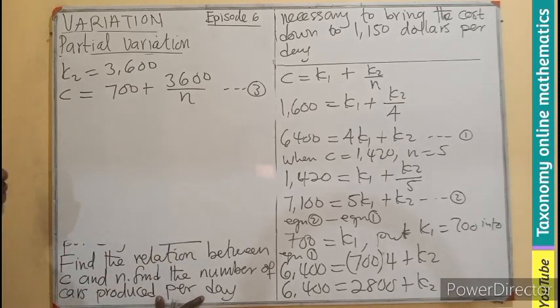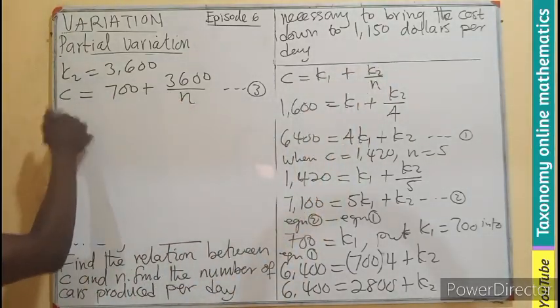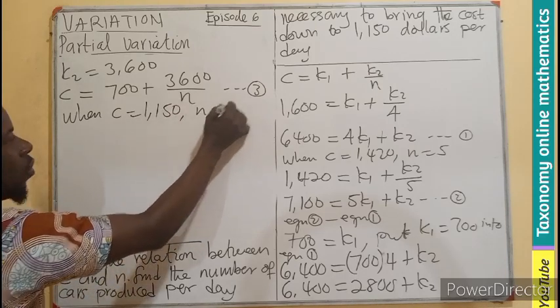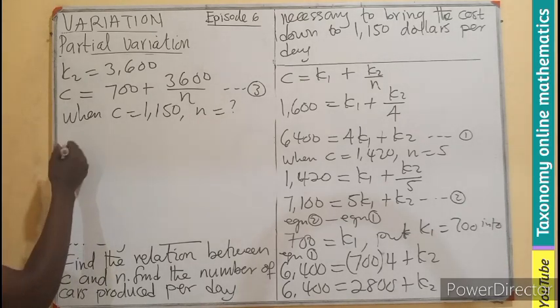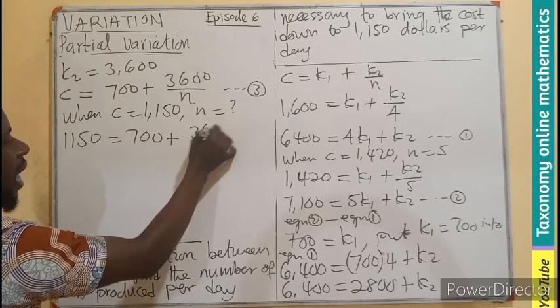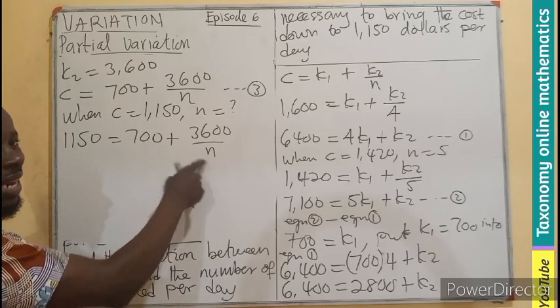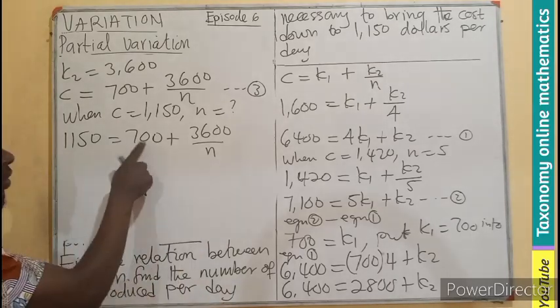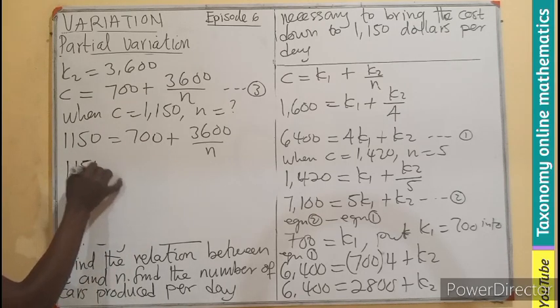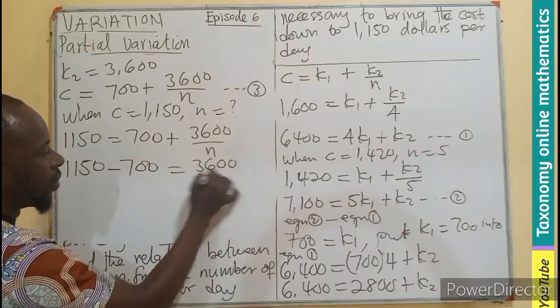The next question is to find the number N when we are having the C reduced to 1,150. So when C equals 1,150, N will be equal to what? This will be 1,150 equals 700 plus 3,600 over N. We could have multiplied by N, but N is unknown. So let's take away the constants together.